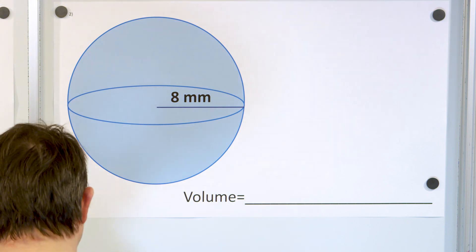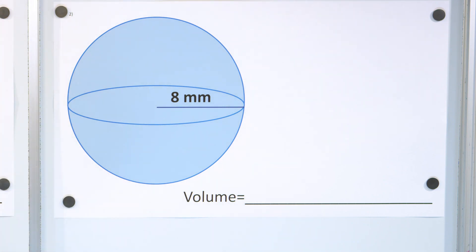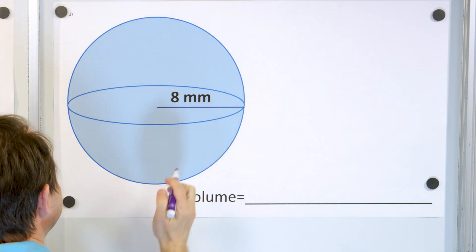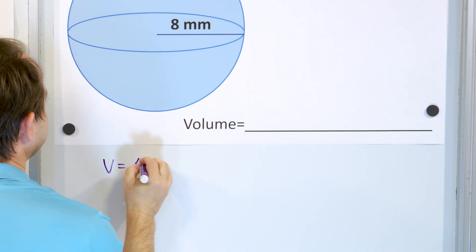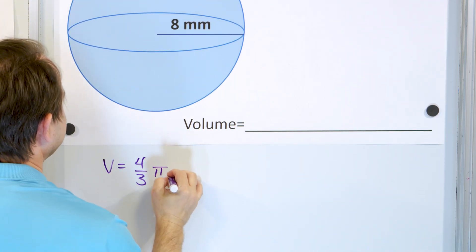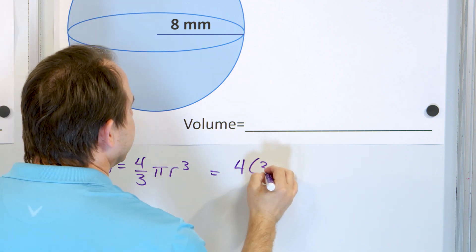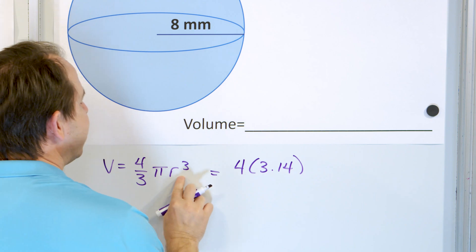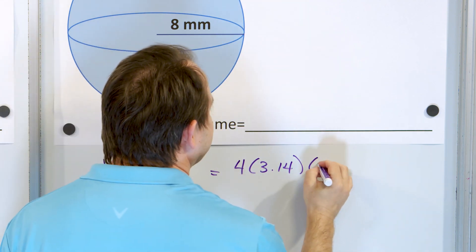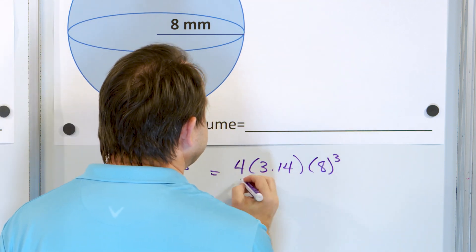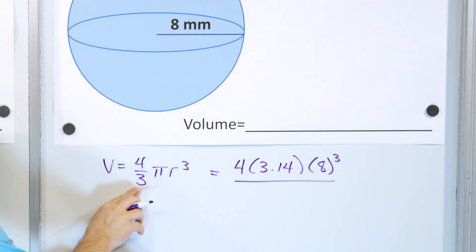So, problem number two. Same old story. We have a sphere, radius is eight, the volume is four-thirds times pi times r cubed. Now, I'm going to write it as four times 3.14 times the radius cubed, but the radius is eight, so it's eight cubed, like this. And on the bottom, I'm going to write that three, because it's divided by three there.